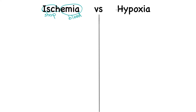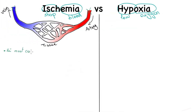Hypoxia, on the other hand, consists of 'hypo' referring to a low amount, and oxygen — altogether it means oxygen deficiency. Ischemia is the most common type of cell injury.